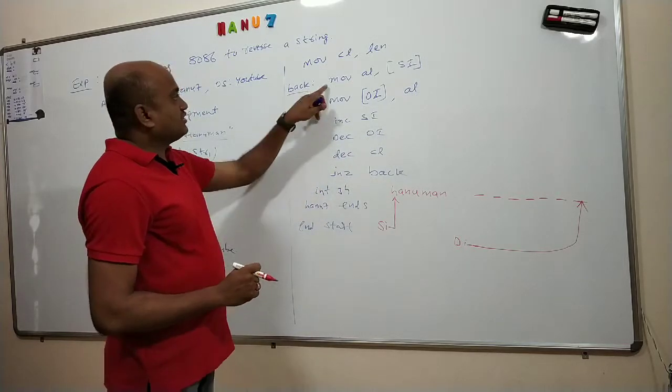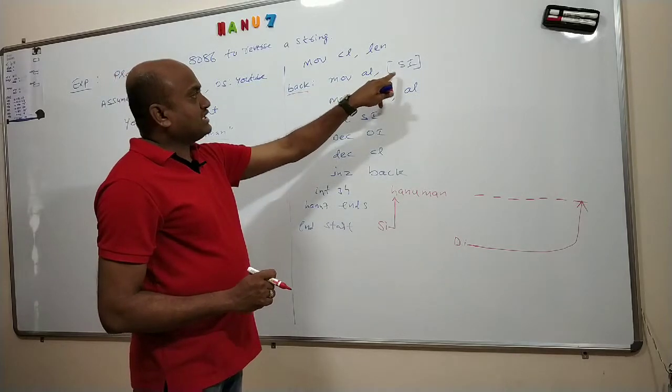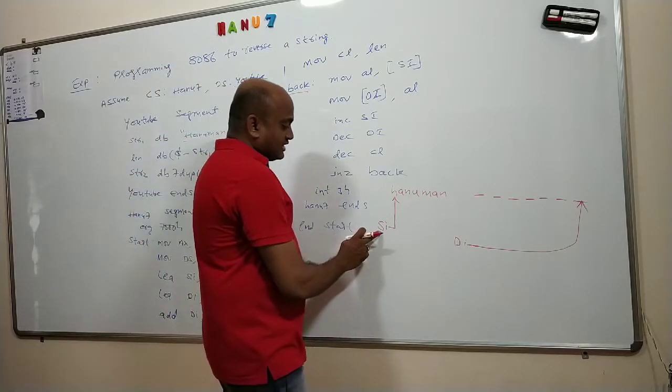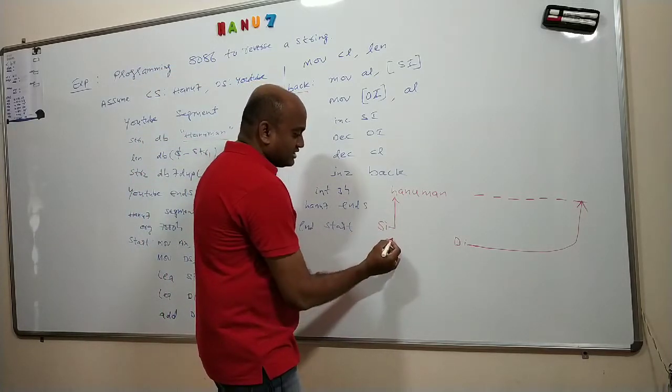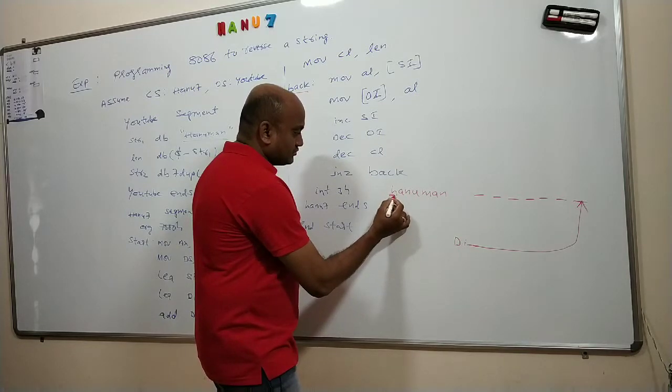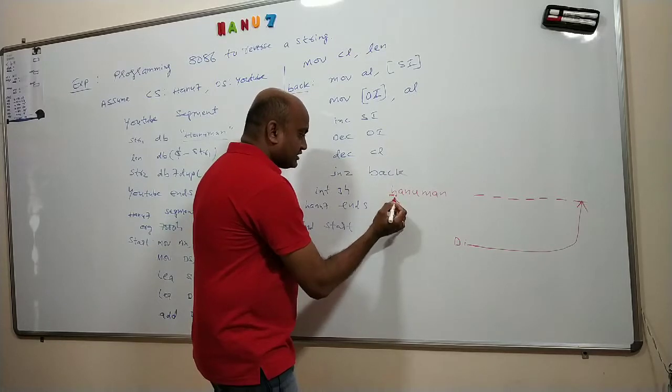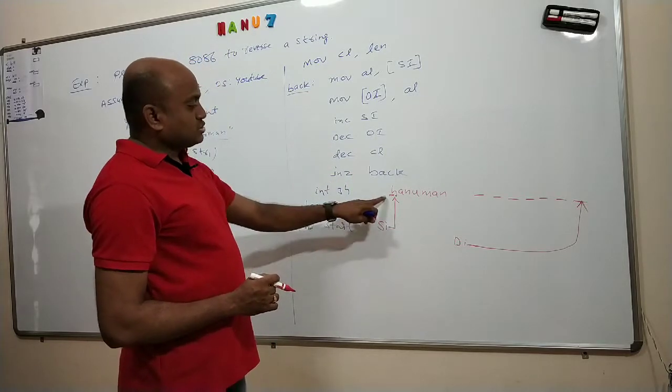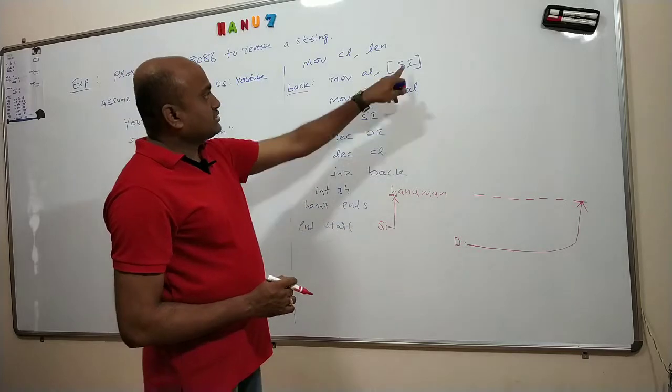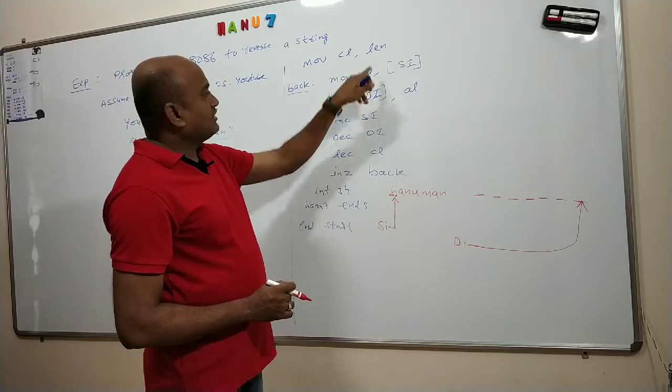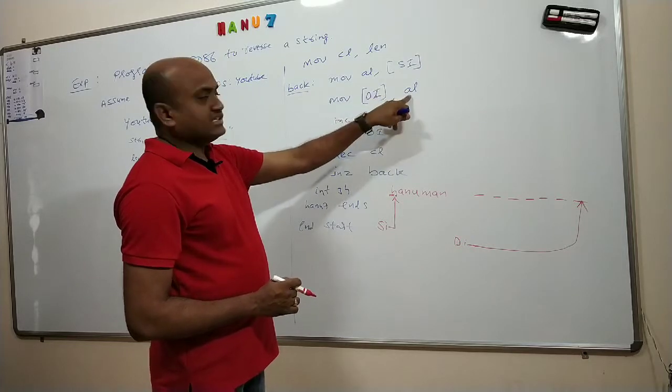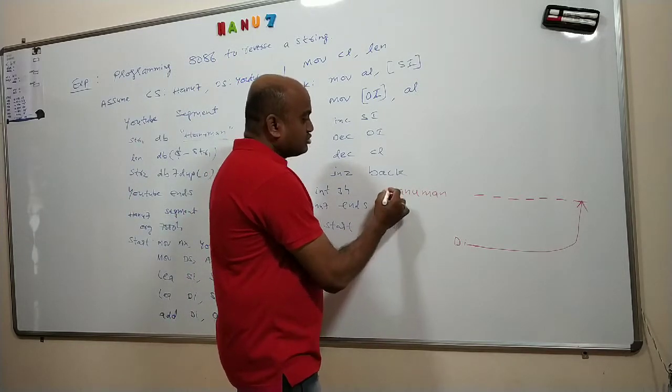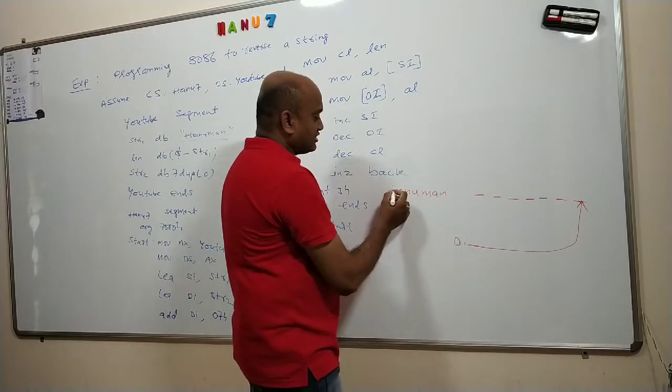So what did I write here? Move AL, content of SI. This is called content of SI. So what do you mean by content of SI? SI is pointing to the first memory. So content of SI means whatever the character or data that is available in this memory location will become the content of SI. In the memory we have H, so that H will be copied into AL. From AL, whatever the character that is there, H, will be copied into DI. That means the first character which SI is pointing is going into the place where DI is pointing. So this H will come here.